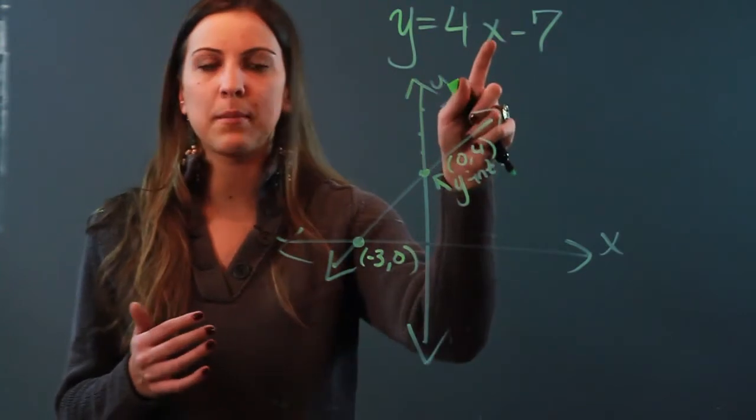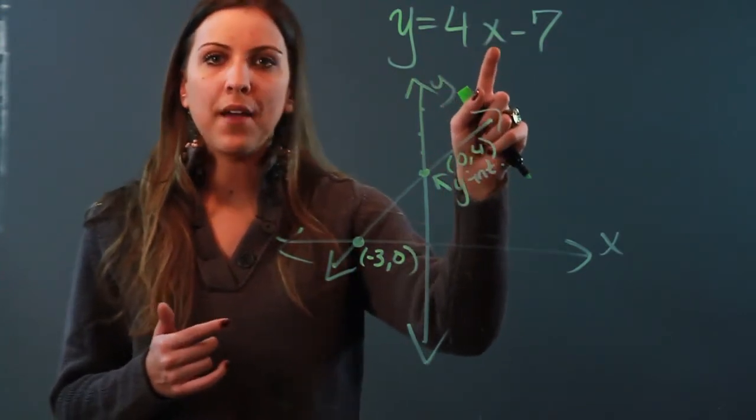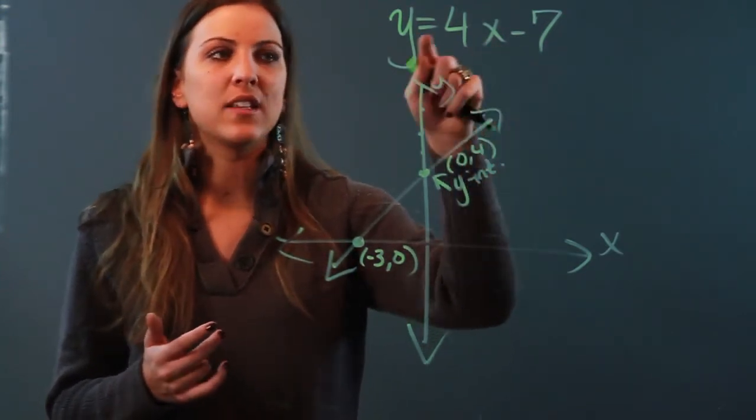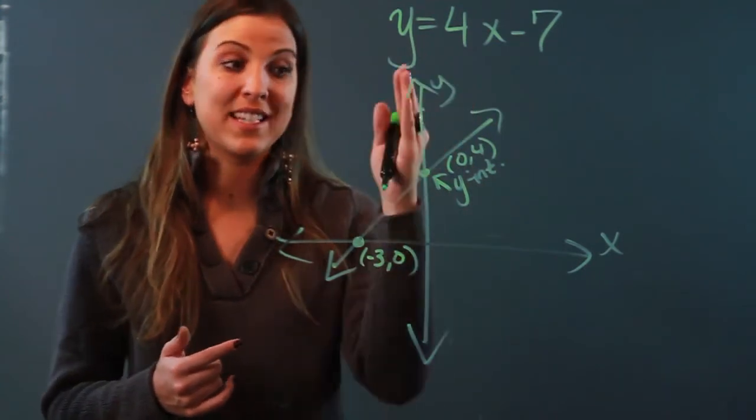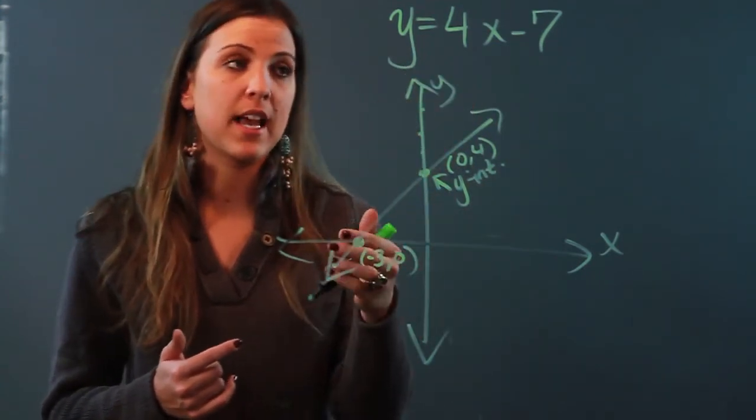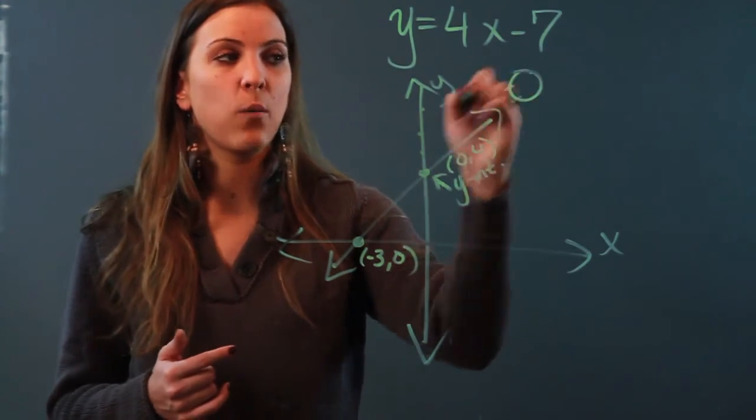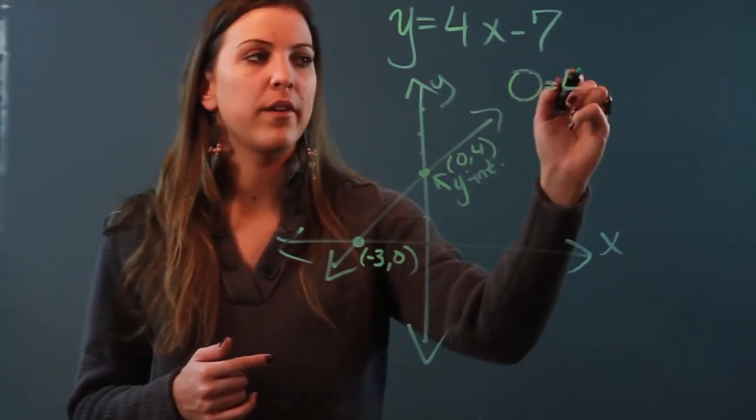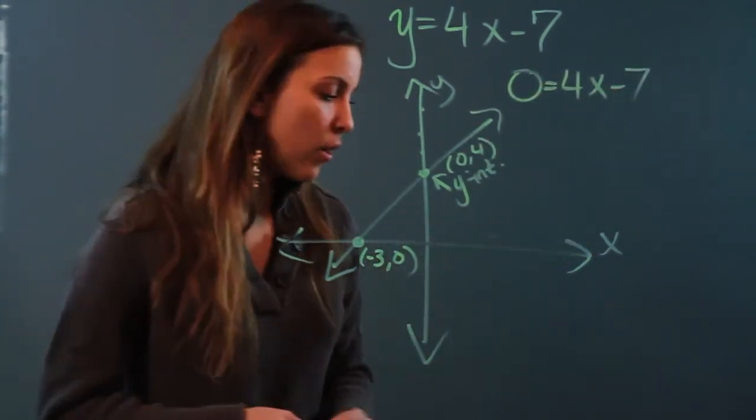So that said, if I wanted to find out what the x-intercept of this line was, what I have to do is find out when is y equal to zero. Because that's where my line intercepts the x-axis. So I'm going to go ahead and set y equal to zero and rewrite the rest of the equation.